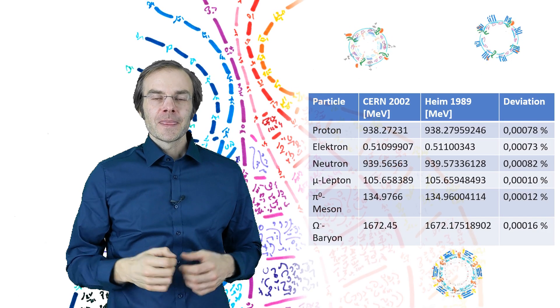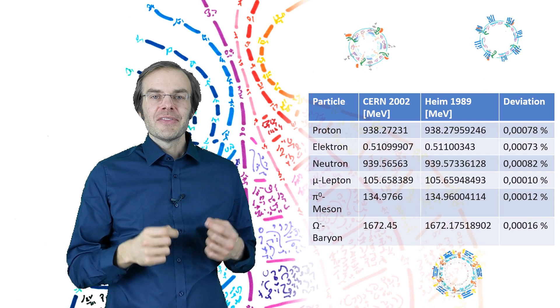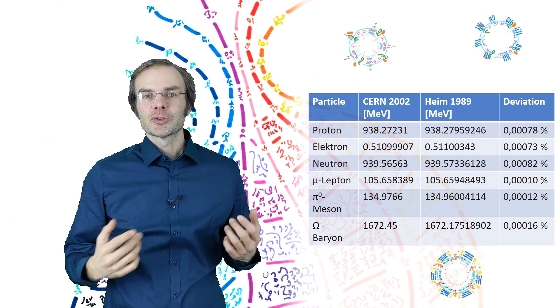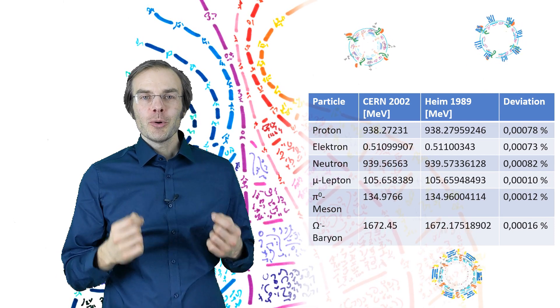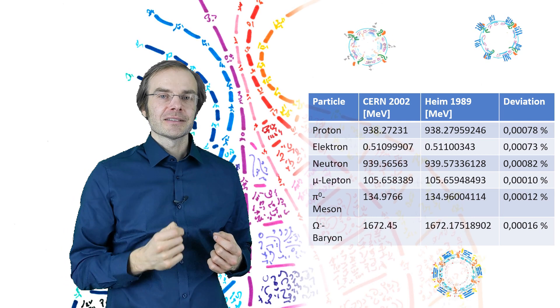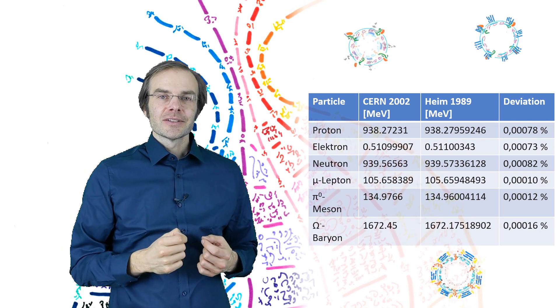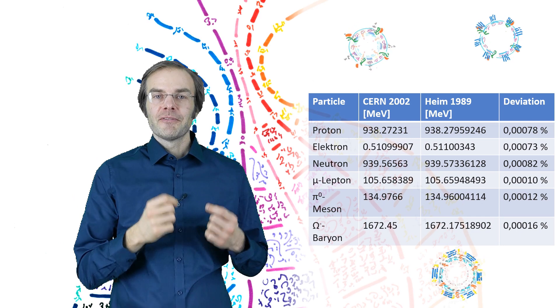In 1980, Heim had his mass formula programmed at the DESY synchrotron facility in Hamburg, Germany, where it showed that it could correctly predict the basic states of most elementary particles with very low error margins.